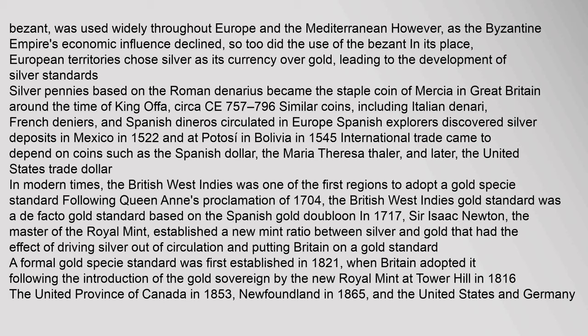In modern times, the British West Indies was one of the first regions to adopt a gold specie standard following Queen Anne's Proclamation of 1704, based on the Spanish gold doubloon. In 1717, Sir Isaac Newton, the master of the Royal Mint, established a new mint ratio between silver and gold that had the effect of driving silver out of circulation and putting Britain on a gold standard. A formal gold specie standard was first established in 1821, when Britain adopted it following the introduction of the gold sovereign in 1816. The United Province of Canada in 1853, Newfoundland in 1865, and the United States and Germany de jure in 1873 also adopted gold.